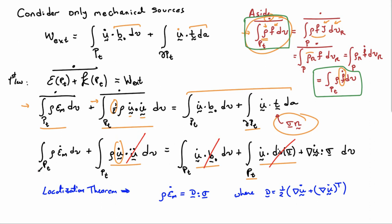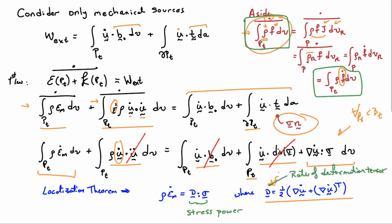Taking the remaining first term and the surviving term on the right-hand side, we apply the localization theorem since this relationship holds for all parts Pt subset of Bt. This tells us that rho times epsilon_m-dot equals D double-contracted with sigma, where D is the symmetric part of the velocity gradient — the rate of deformation tensor. The term D double-contracted with sigma is known as the stress power.